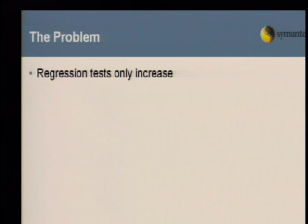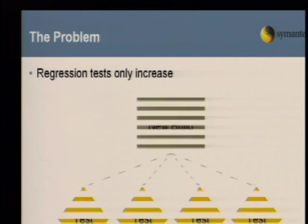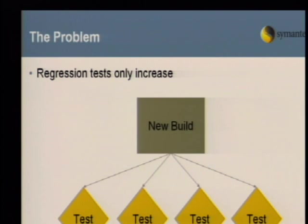The basic problem is that regression tests only increase, especially on mature products. A product starts out with a few tests; a new build comes out, you run a few automated or manual tests. Eventually this turns into something unmanageable within a certain amount of time. You can't test everything all the time. This is essentially a problem that doesn't scale well.